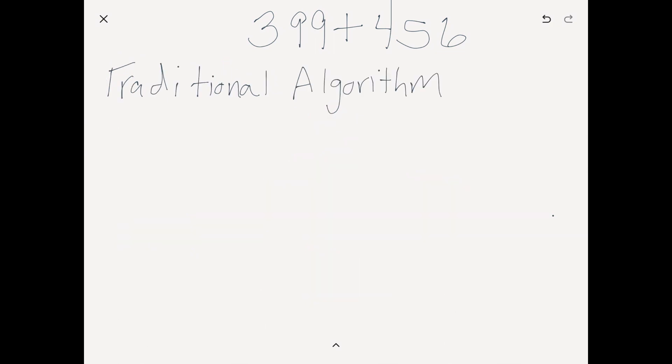Our last strategy is the traditional algorithm — what in the United States we call the traditional algorithm. This is the way we traditionally learned to solve addition problems: set it up, add the ones, carry over, add the tens, carry over, and get the answer. It's called an algorithm because you can program a computer or calculator to do it — the same steps every single time, with no real decision making. You don't need number sense or even place value understanding. You only need single-digit addition and the ability to carry the one.